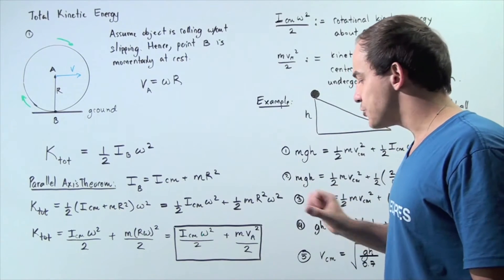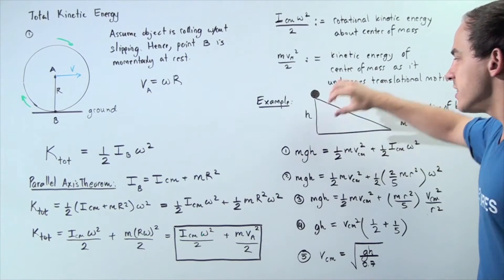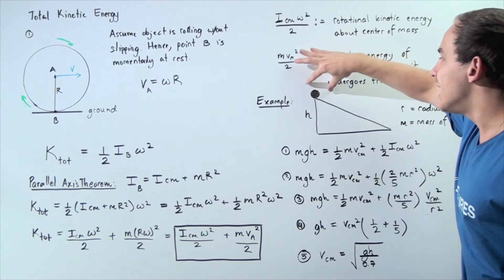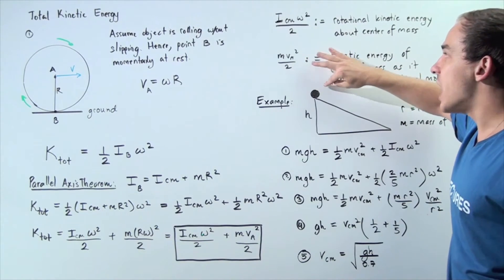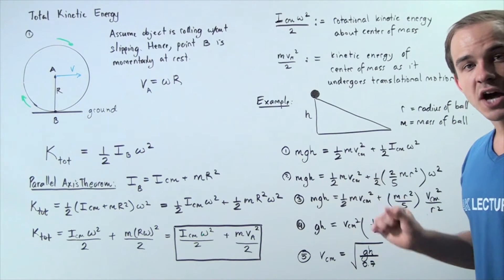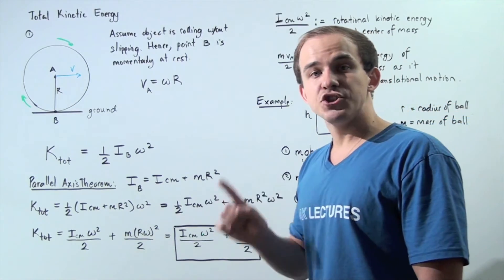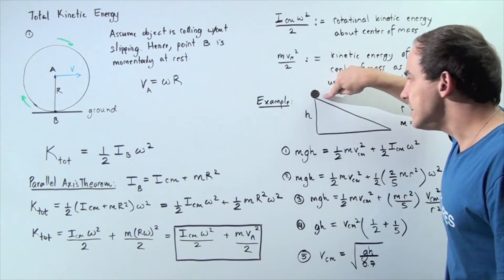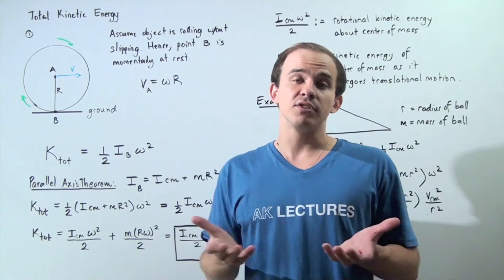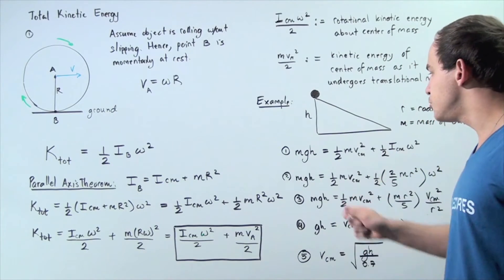Let's look at one application of this equation. Suppose we have an inclined plane with height h, and the inclined plane is frictionless. We place a solid sphere with mass m and radius r at the top and let it go. The sphere rolls without slipping. We want to calculate the final velocity of the sphere at the bottom of the inclined plane using conservation of energy. Initially, the object only has gravitational potential energy because its velocity is zero, so the initial energy is mgh.